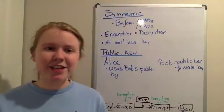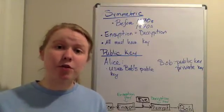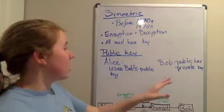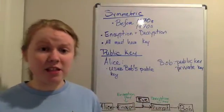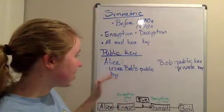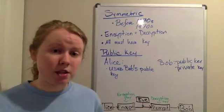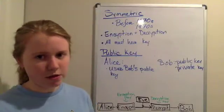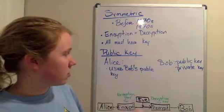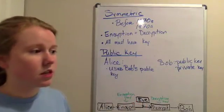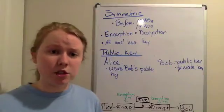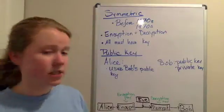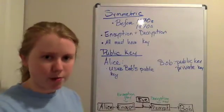And then she sends that message that has been encrypted to Bob. Now Bob also has his own private key. Now the private key is the only way, in most cases, theoretically, it's the only way to interpret Alice's message. You can't use the public key to understand the message. You can only use it to encrypt, not to decrypt.